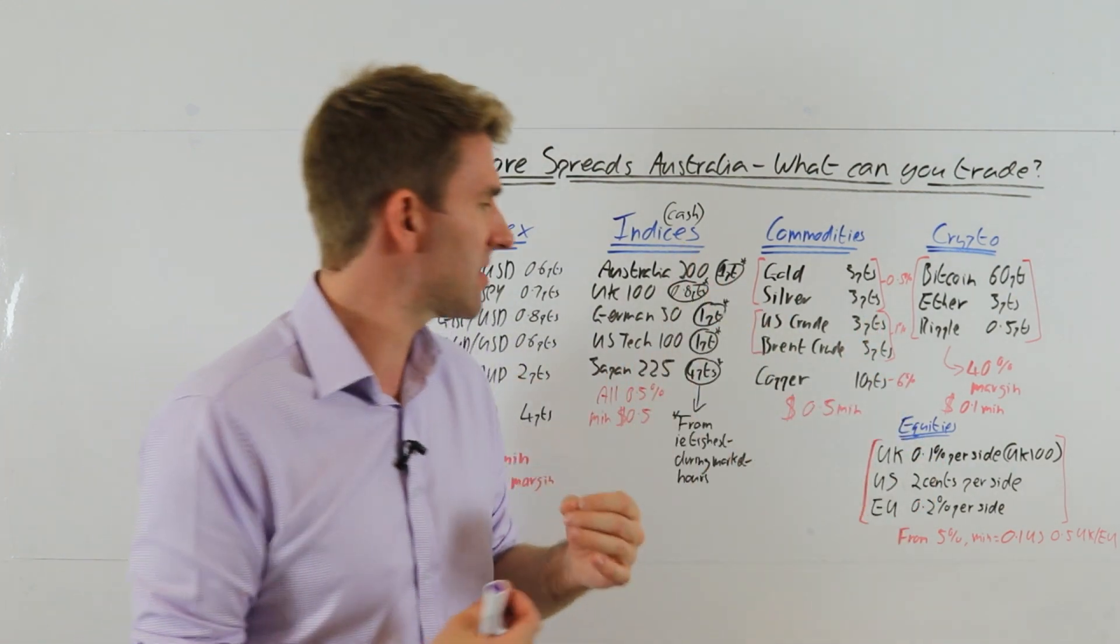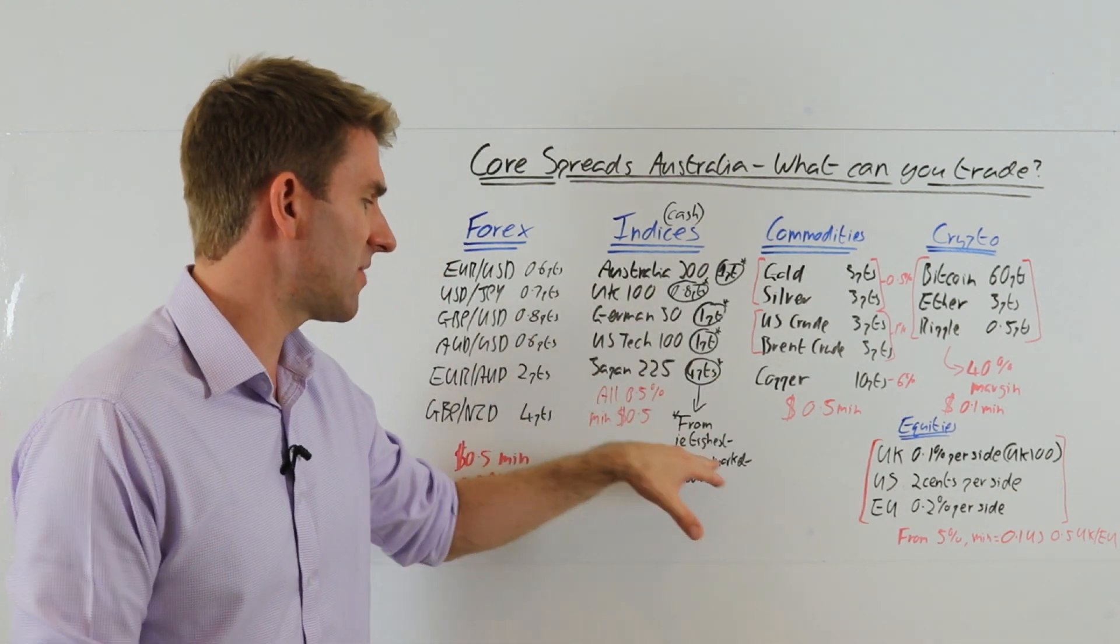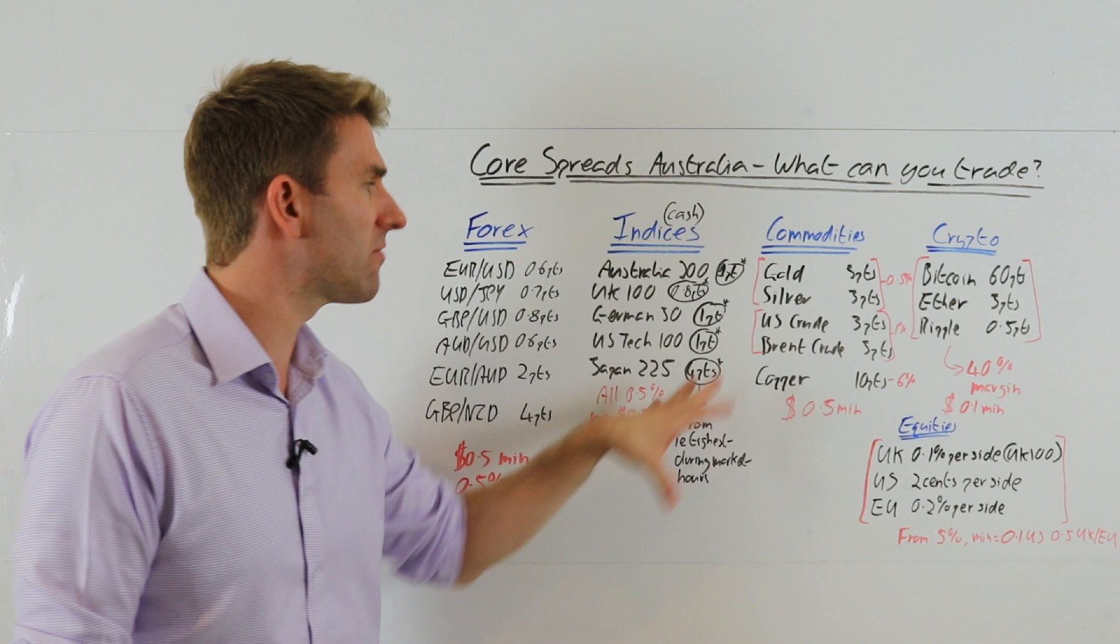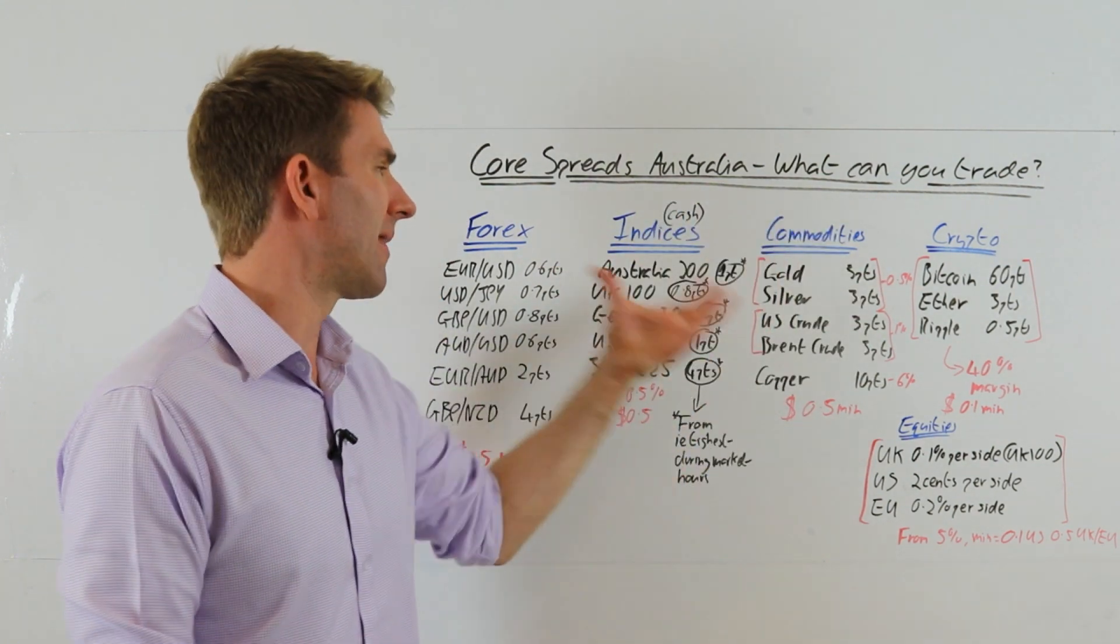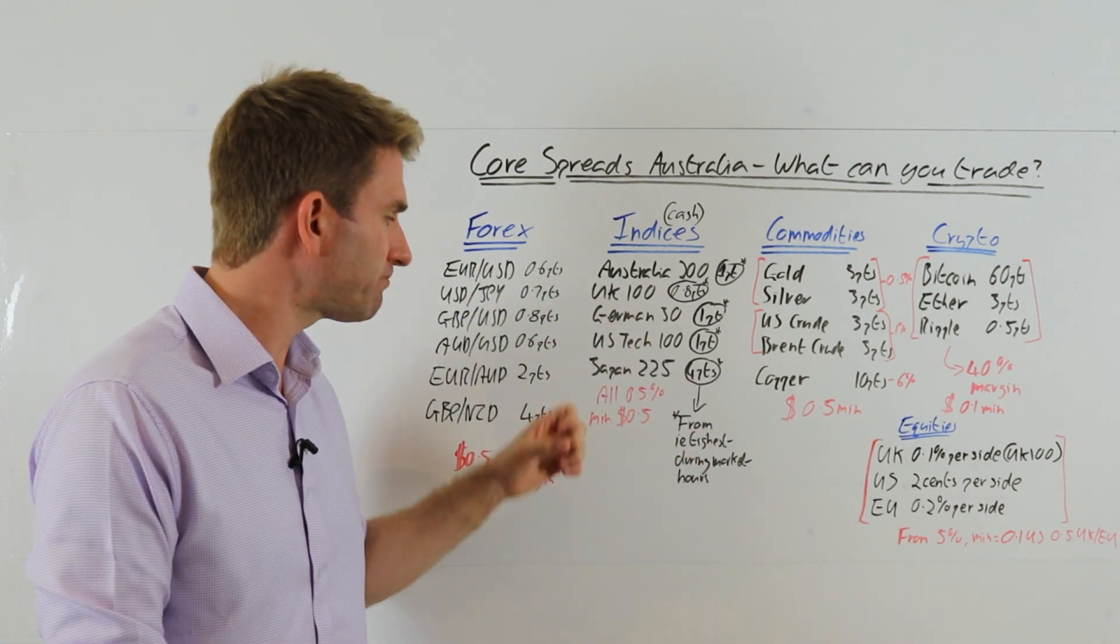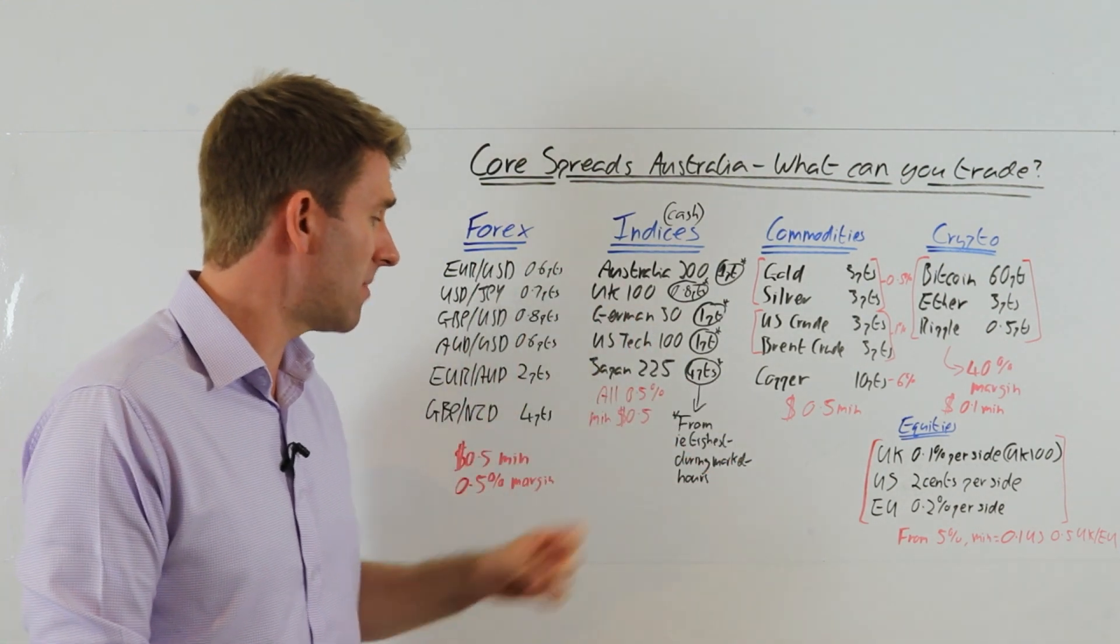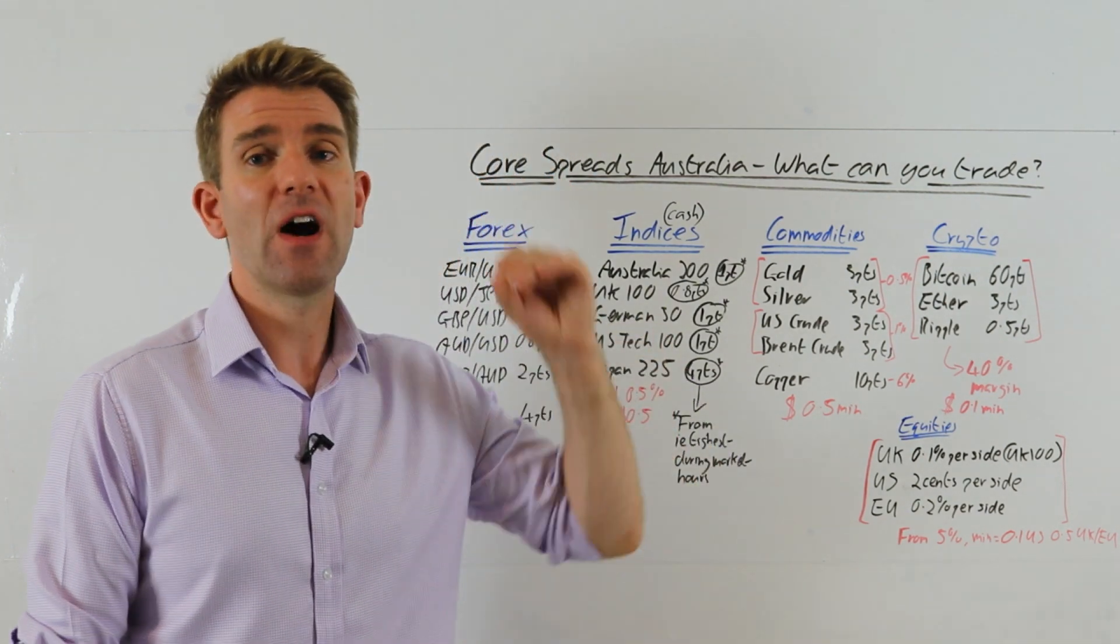There's no point having a low spread if the range isn't very wide, because the ratio is going to be poor. When you've got a wide spread, that's okay, but if the range is even wider then that's okay. So you have to look at both things at the same time. But that's definitely good on the German 30. And like I say, these are the tightest during market hours, so from a figure most of those are during the actual underlying market open and they change when the market closes and you go after-hours trading. They're all 0.5% margin and the minimum for those as well is only 0.5 dollars.